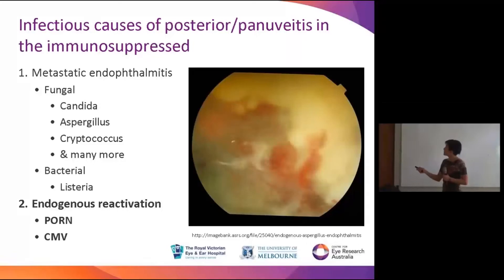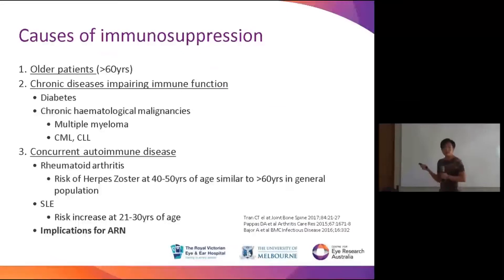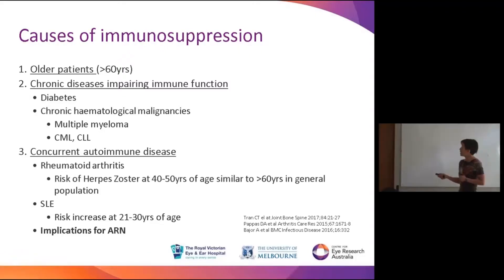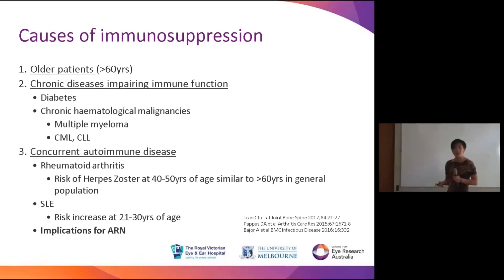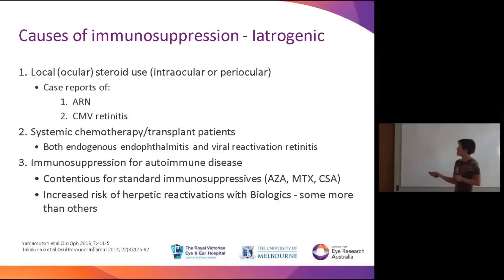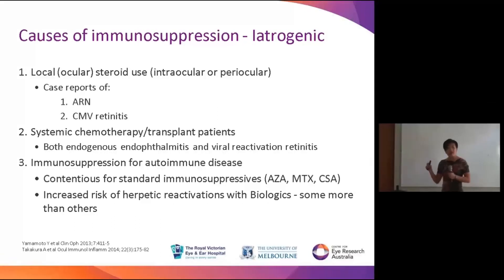In acute uveitis, the challenge is determining the diagnosis, choosing appropriate investigations, and ruling out infection — especially in immunosuppressed patients. Immunosuppression includes: older patients (immune function declines from age 60), chronic diseases like diabetes, hematological malignancies, patients with autoimmune diseases such as rheumatoid arthritis who have higher herpes zoster risk, and iatrogenic immunosuppression — there are case reports of acute retinal necrosis and CMV retinitis after intravitreal steroid injections. Always think infection; take a thorough history to determine immunosuppression status.